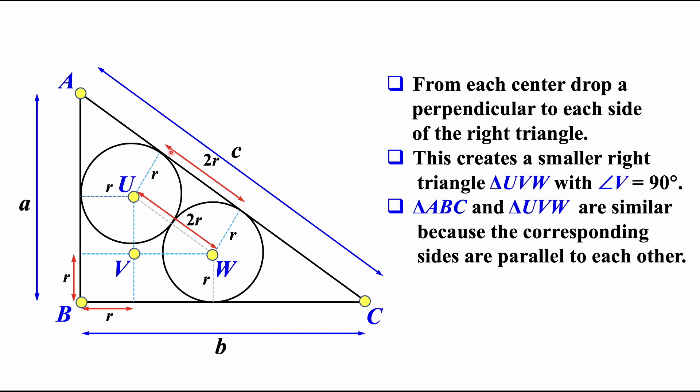As a result, the distance between these two tangent points is also 2R. This construction gives us a right triangle U, V, W, where angle V is 90 degrees.